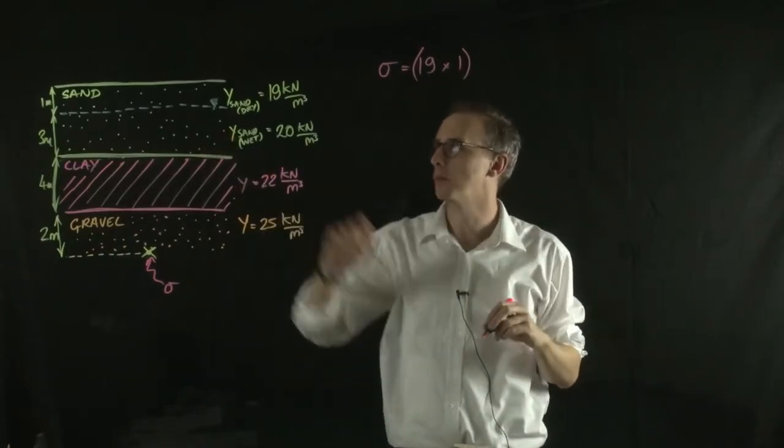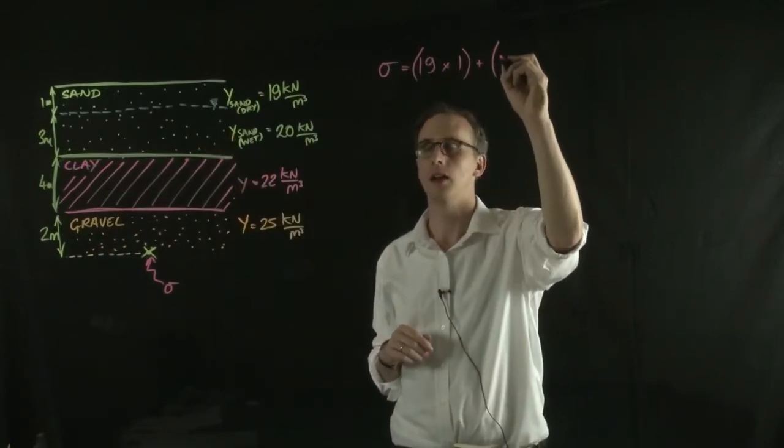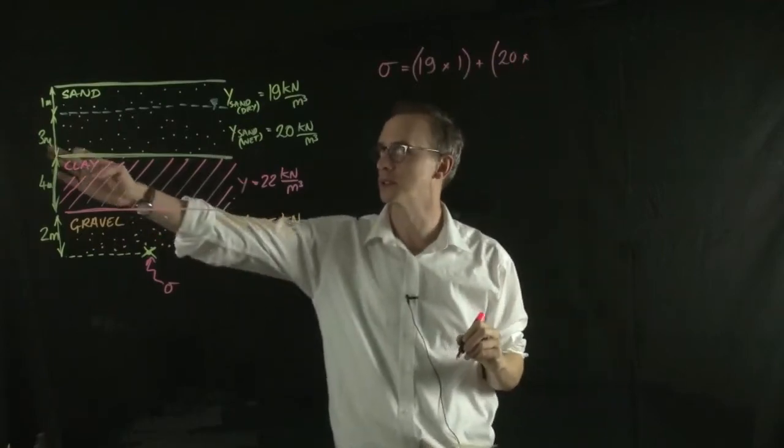And then the sand below the water table we treat as a separate layer. And we have 20 multiplied by its thickness which is 3.